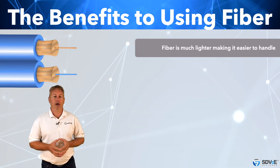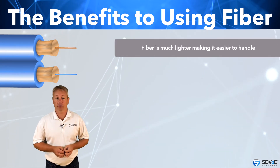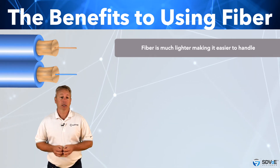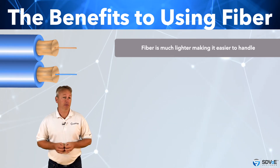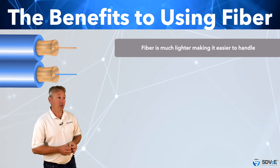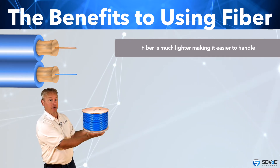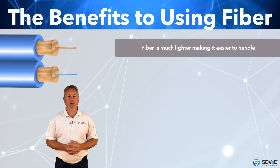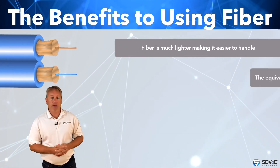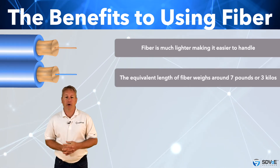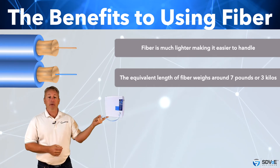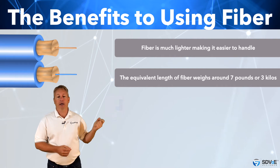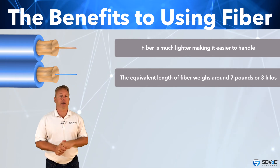Most people don't realise that fibre is considerably lighter in weight than twisted pair, making it much easier to handle. A thousand feet — 305 metres — of shielded Cat 6 is approximately 50 pounds or 23 kilos, with a diameter of around 8 millimetres or a quarter inch. The equivalent length of fibre weighs around 7 pounds, or just 3 kilograms depending on the strand count, and is only 3 millimetres in diameter.